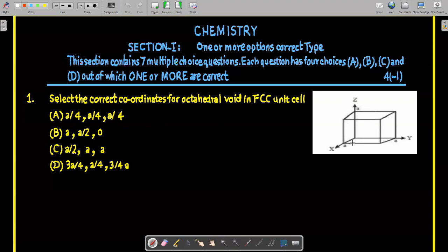For the first option, A/4, A/4, A/4 — starting from the origin at (0, 0, 0), this is along one body diagonal of the cube. On this body diagonal passing through the origin, all coordinates x, y, and z are equal at any point. The tetrahedral void T1 has coordinates (A/4, A/4, A/4), and the distance from the corner is √3·A/4.